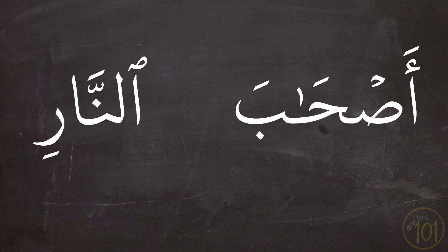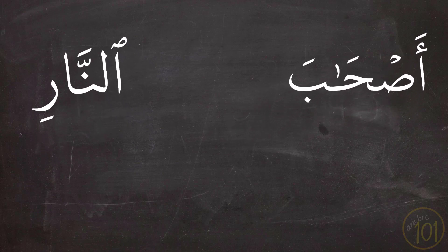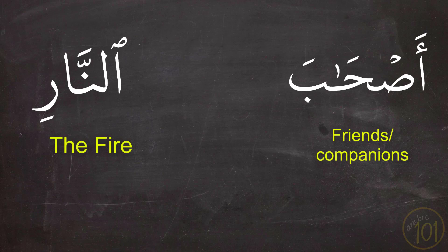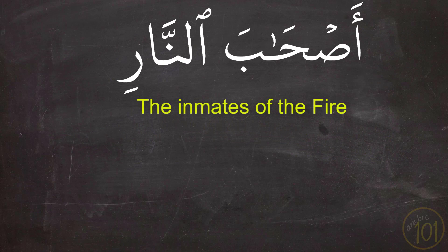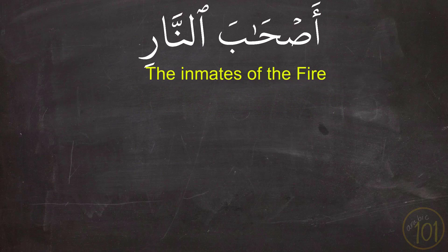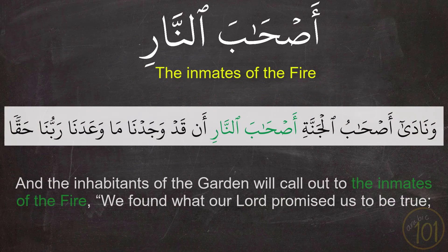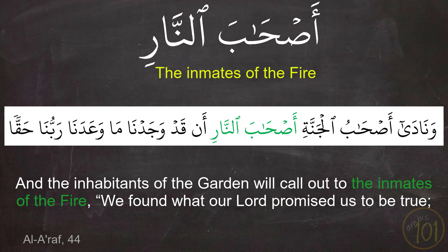Next is the opposite: أَصْحَابَ النَّارِ. This combination uses the same word أَصْحَابَ, meaning 'friends or companions,' combined with النَّارِ, meaning 'the fire.' This combination means 'the inmates of the fire.' We see it used in the example: وَنَادَى أَصْحَابُ الْجَنَّةِ أَصْحَابَ النَّارِ أَنْ قَدْ وَجَدْنَا مَا وَعَدَنَا رَبُّنَا حَقًّا.